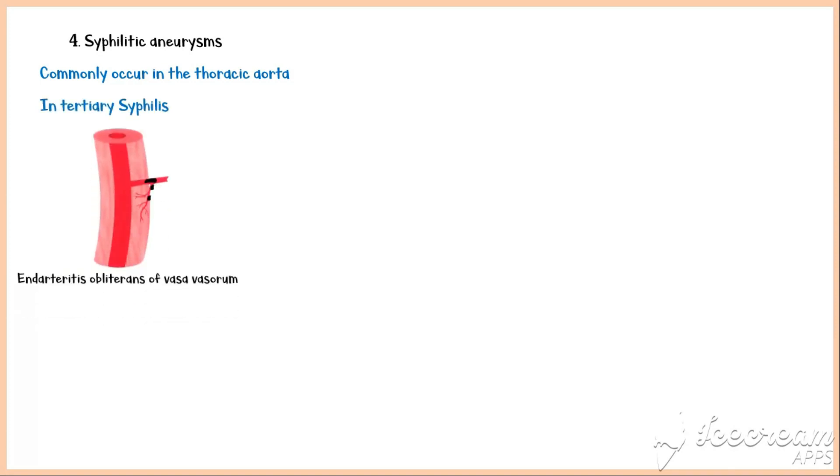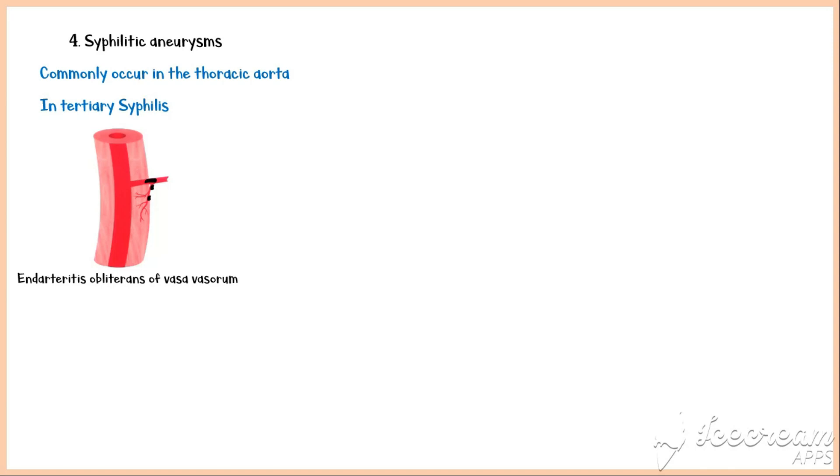Syphilitic aneurysms commonly occur in the thoracic aorta. Although it is an infectious cause of aneurysms, the pathogenesis is a bit different from mycotic aneurysms. They commonly occur in tertiary syphilis, where the chronic infection involving the vasa vasorum leads to endarteritis obliterans, which compromises the blood supply to the aortic media, causing medial degeneration.